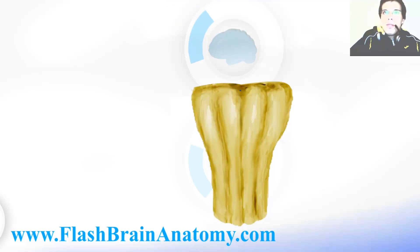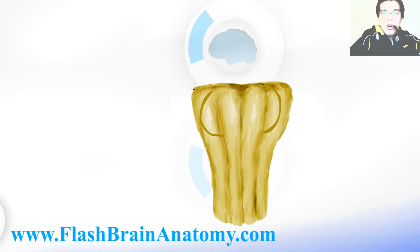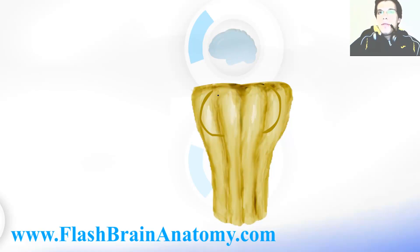Those two pyramids are separated by the median fissure in the middle. And then we have these round bodies, a bit more lateral from the pyramids. They are called the olivary bodies — elevations made by the olivary nuclei inside. The olivary bodies are separated from the pyramids by the anterolateral sulcus.